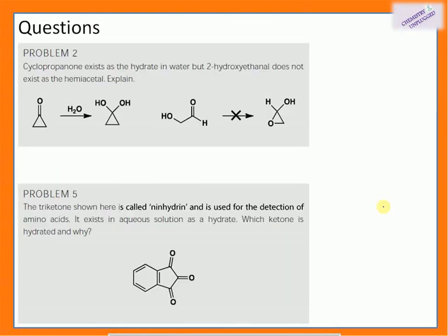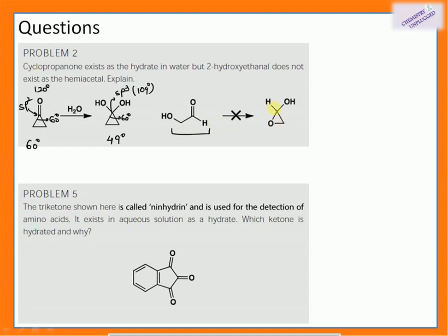Now taking questions from the chapter. Question 2: Cyclopropanone exists as a hydrate in water, but 2-hydroxyethanal does not exist as a hemiacetal — explain. For cyclopropanone, the ring angle is 60° but the sp2 carbon wants 120°, giving 60° of strain. After hydration the sp3 carbon wants 109°, so strain drops to 49° — a relief in strain that drives the reaction. For 2-hydroxyethanal, the starting acyclic molecule has no strain, but forming a three-membered ring would introduce strain, so the reaction is not favorable.